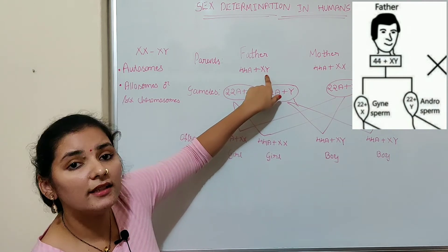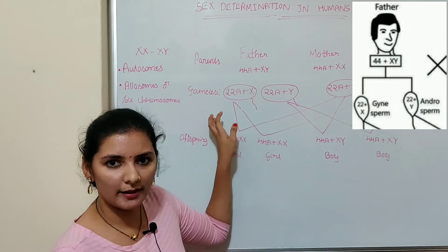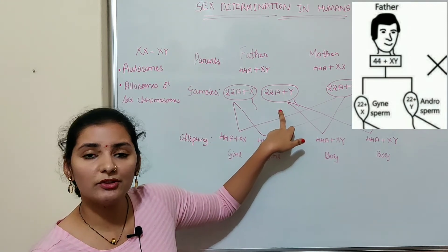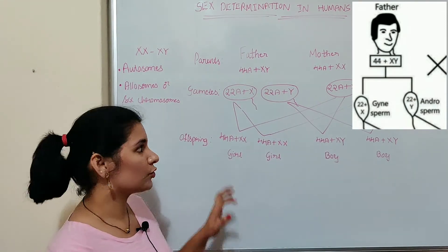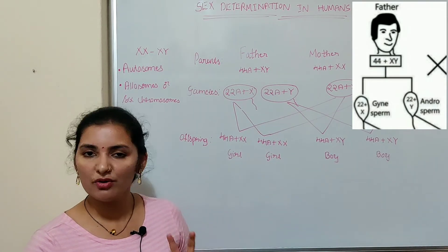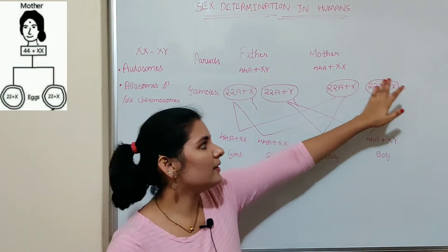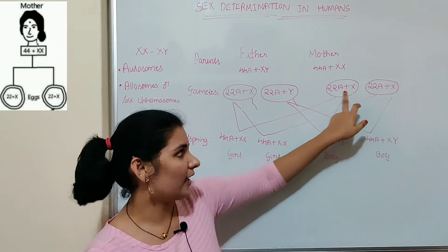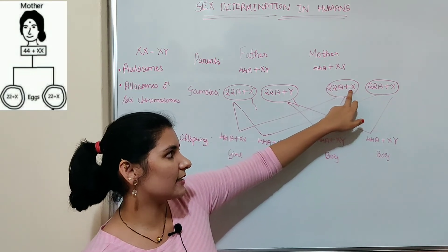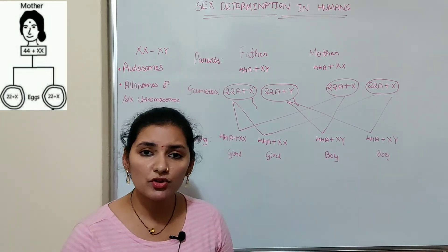Whereas another gamete — another sperm — receives 22 autosomes plus the other sex chromosome, that is Y. So 50% of the sperm produced will carry the X chromosome and another 50% will carry the Y chromosome. During spermatogenesis, two types of gametes are produced in the case of males. Whereas in the case of females, since they have the same type of sex chromosome, all gametes receive the X chromosome. As you can see in this diagram, all eggs have 22 autosomes plus X chromosome. So during oogenesis, only one type of gamete is produced.